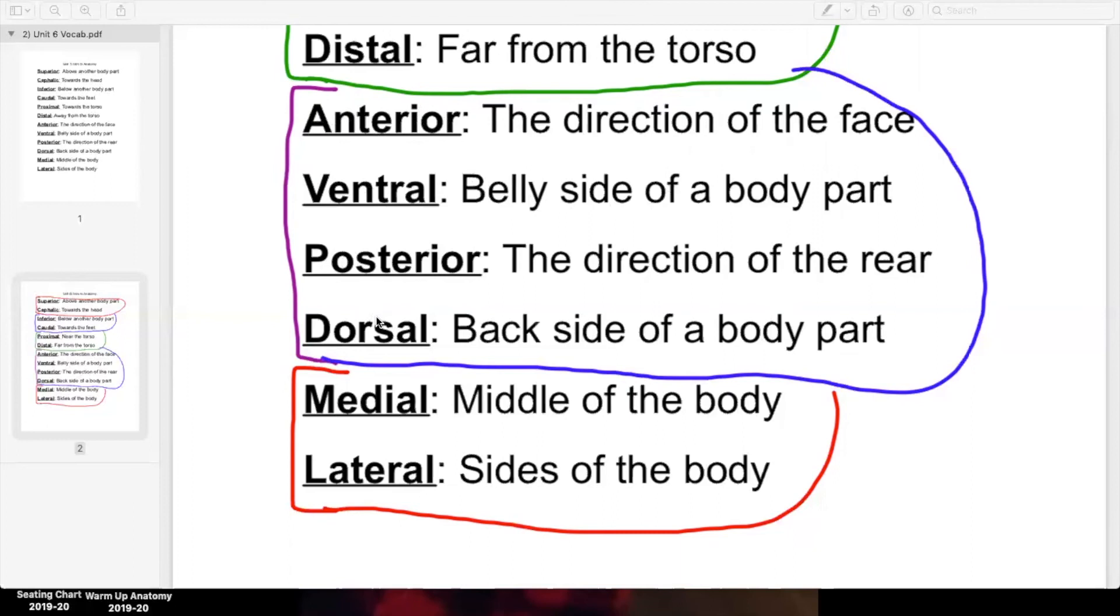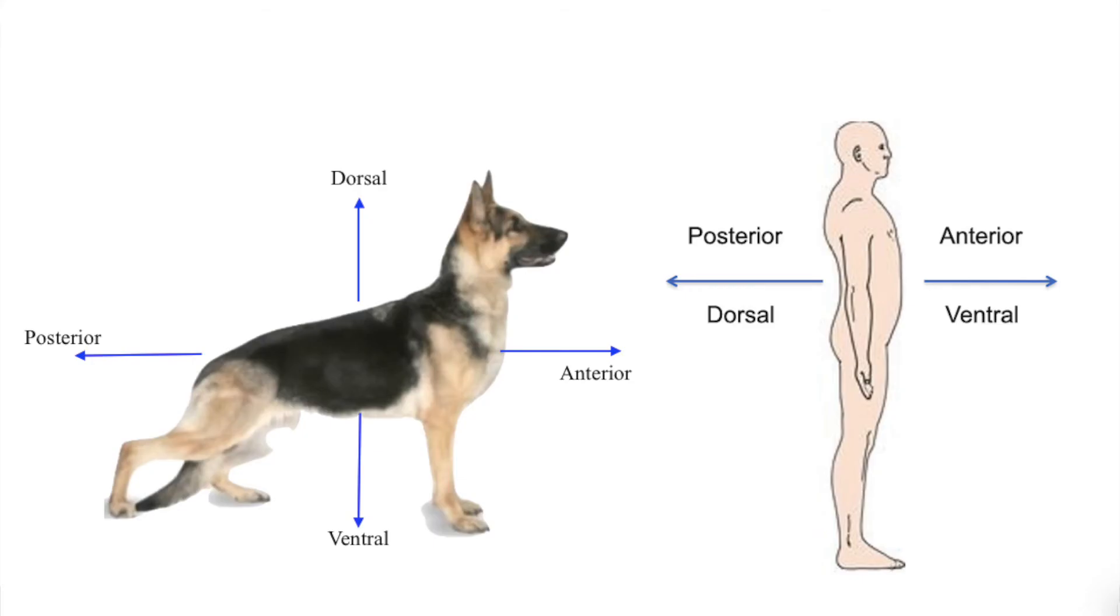Posterior and dorsal. Posterior, direction of the rear. Rear is just a nice way of saying your butt. This is the direction your butt is facing. You know, posterior actually is just another word for your butt. And dorsal is your back, the direction that your back is facing. Again, these two words are exactly the same for a human being. Standing up straight, your butt and your back face the same direction.